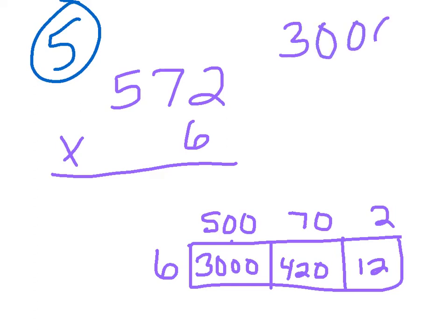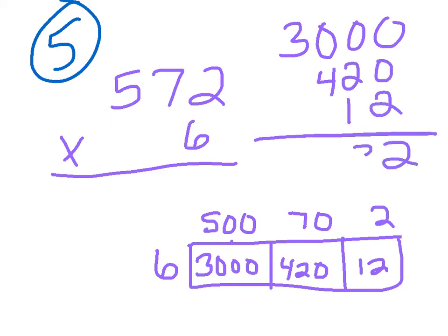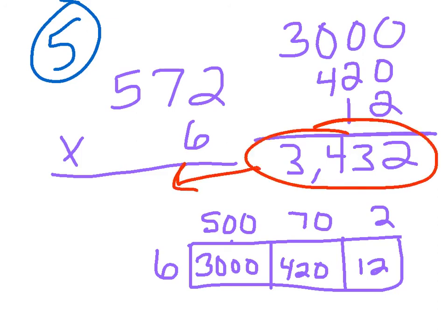so 3,000 plus 420 plus 12, that's 2, that's 3, that's 4, and that's 3. So, if my answer, if I do 572 times 6, the product is 3,432. I'm breaking up that number, I'm going 2 times 6, 70 times 6, 500 times 6.